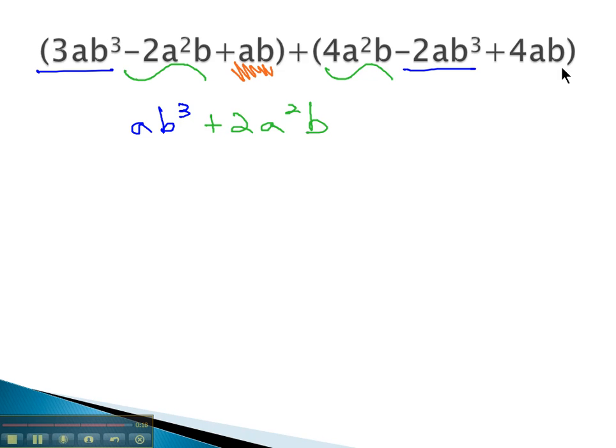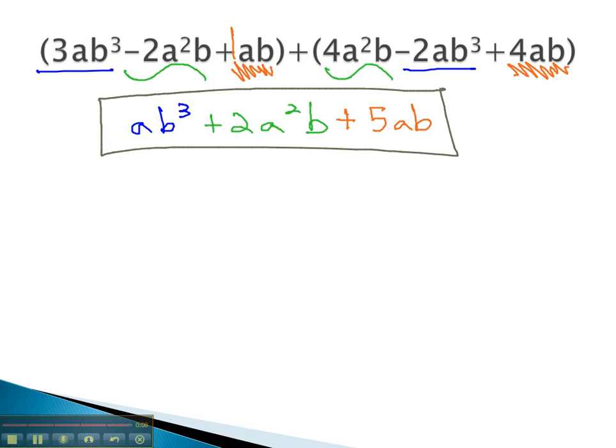And finally, the ab can combine with the ab's. 1 and 4 gives us 5ab's. So when adding polynomials, we're simply combining like terms, adding the coefficients, and making sure the variables and exponents stay the same as we add like terms.